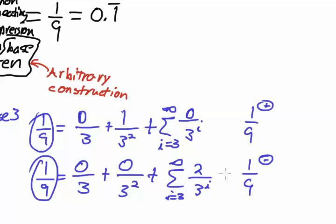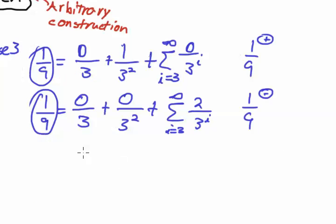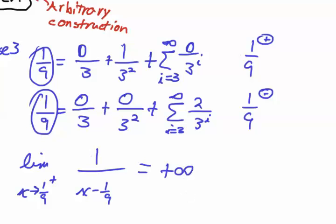So if you were doing a problem where you had a discontinuity in your function at 1 ninth, the most familiar one would be 1 over x minus 1 ninth, for instance. And the limit as x approaches 1 ninth from the right is going to be equal to positive infinity.